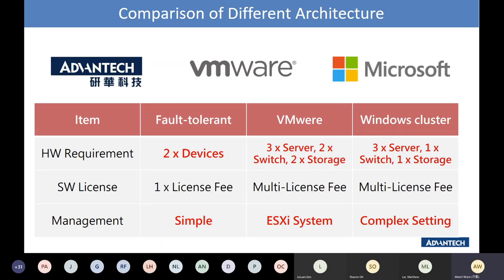Considering all these factors, IBM Indonesia, Formosa Plastic in the countryside, and Delta Power Manufacturing's Tier 2 business — Green Power — all chose Advantech's fault-tolerance system. Therefore, enterprise branch offices are target customers for the fault-tolerance system.